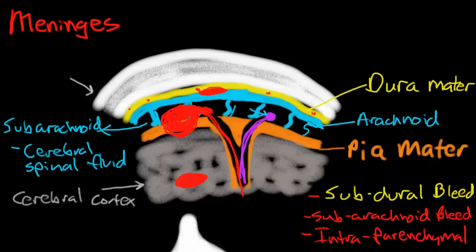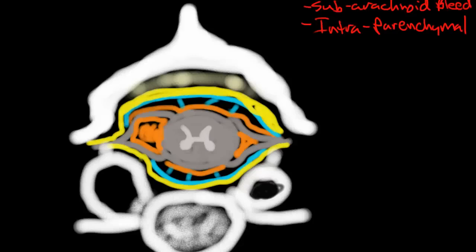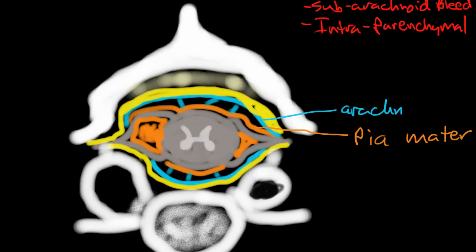The same meninges also surround the spinal cord, but there are some slight differences. We have the same three layers: fused directly to the spinal cord's gray matter is the pia mater. Then there's a little bit of space — the subarachnoid space — then we have the arachnoid, and on the very outside we have the dura mater.